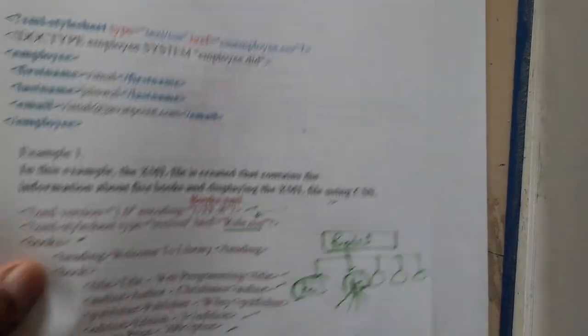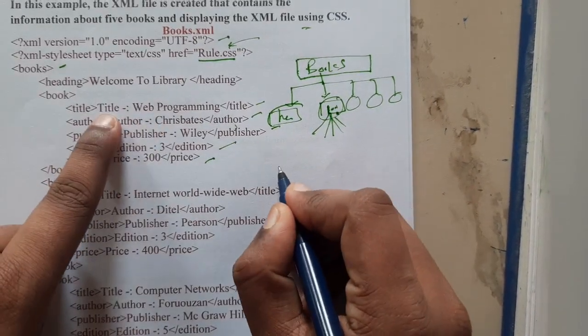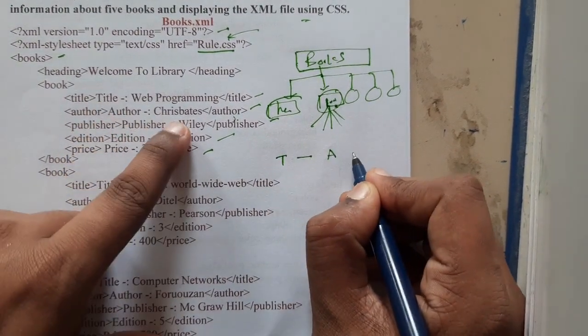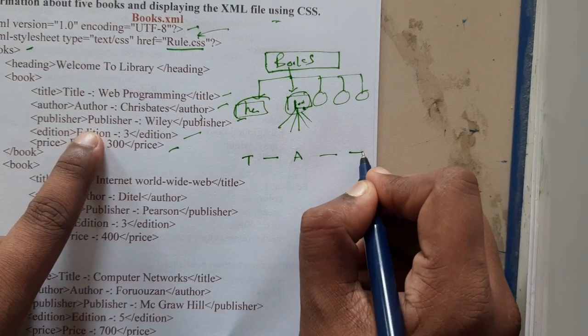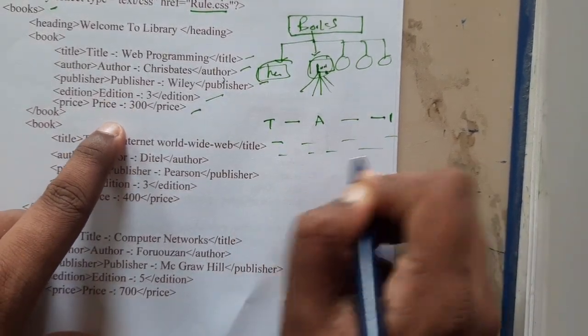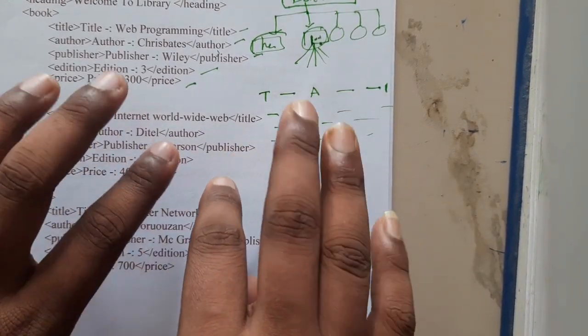It looks good, but if you run it, what will be the output? The output will be really funny to see. In first line you'll be getting title web programming, beside that only you'll be getting author the name, beside that publisher the name. If that space is over it will be continuing to the next line.